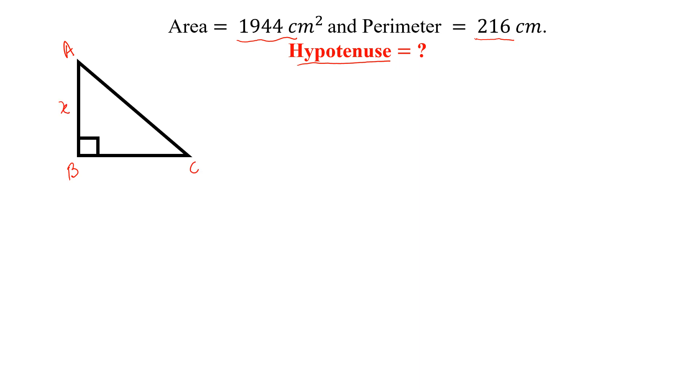AB is x, BC is y, and AC is z. Then by Pythagoras theorem we can write x squared plus y squared equal to z squared. And we know that the area of this right angle triangle is 1944 centimeter square.